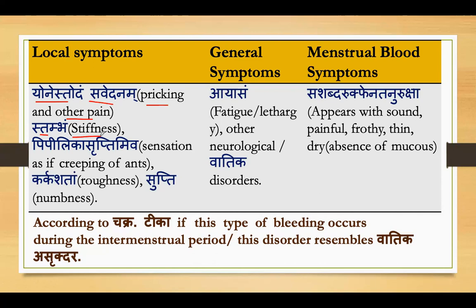Generally, this condition is correlated with endometriosis. Sometimes in endometriosis, the myometrial layer is involved, or because of false endometrium growth in the uterine supports, or due to increased uterine size, the mobility of the uterus becomes restricted, leading to stiffness-like symptoms developing in the uterus.